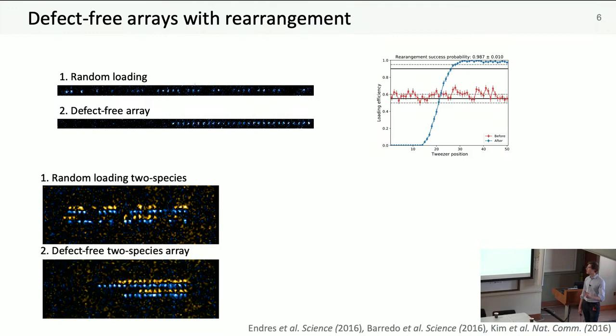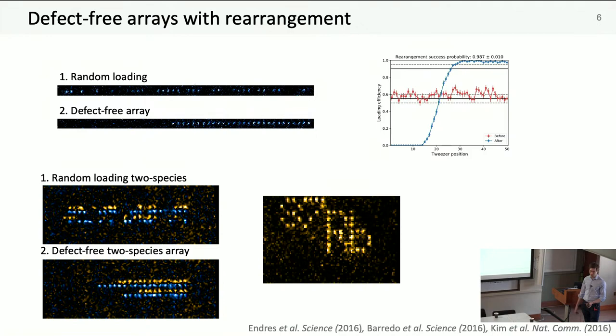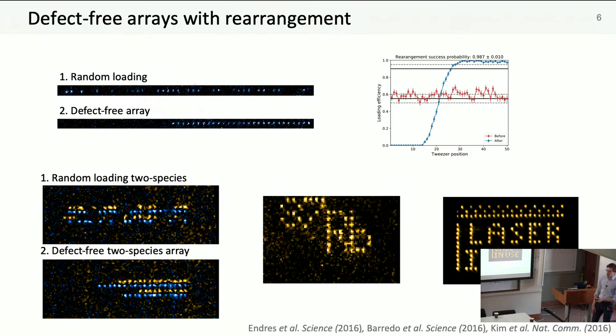Recently, we've upgraded the system to do 2D rearrangement with two species. Here's an example where we have rows of cesium, rubidium, cesium, rubidium in turn. We use the AODs to pick up one row at a time and compress them over. We can do more general geometries, two examples are 87 rubidium written in cesium atoms and our favorite laser in usine.